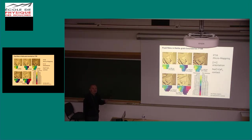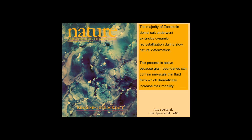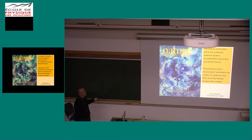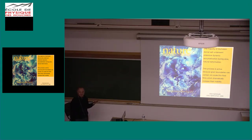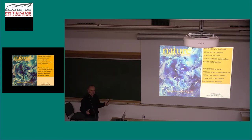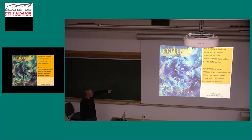These fluid films make the grain boundary velocity in rock salt very, very high. Looking at domal salt from the Zechstein, we can show that there was extensive dynamic recrystallization formed by slow natural deformation — dislocation creep provides the deformation, and grain boundaries are moving all over the place wiping out the energy in the crystals. You see grains with lots of subgrains, and here is a new grain growing and eating the subgrains.